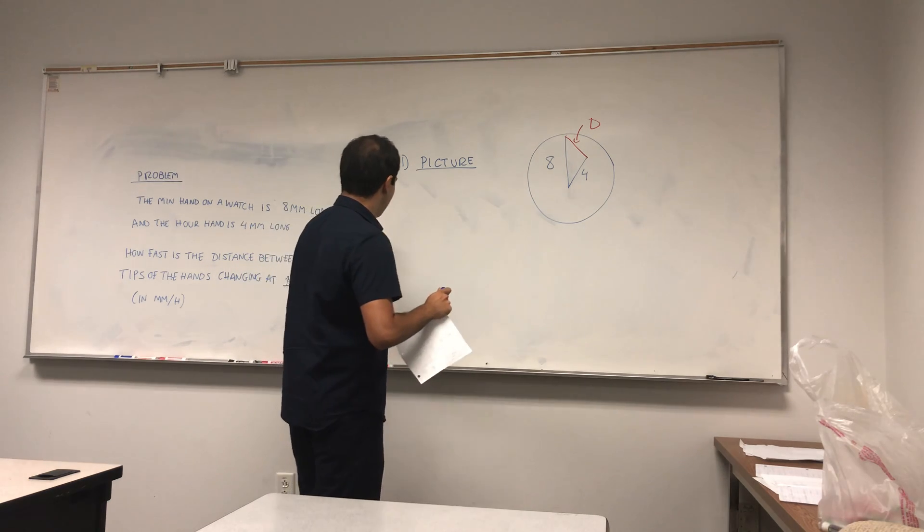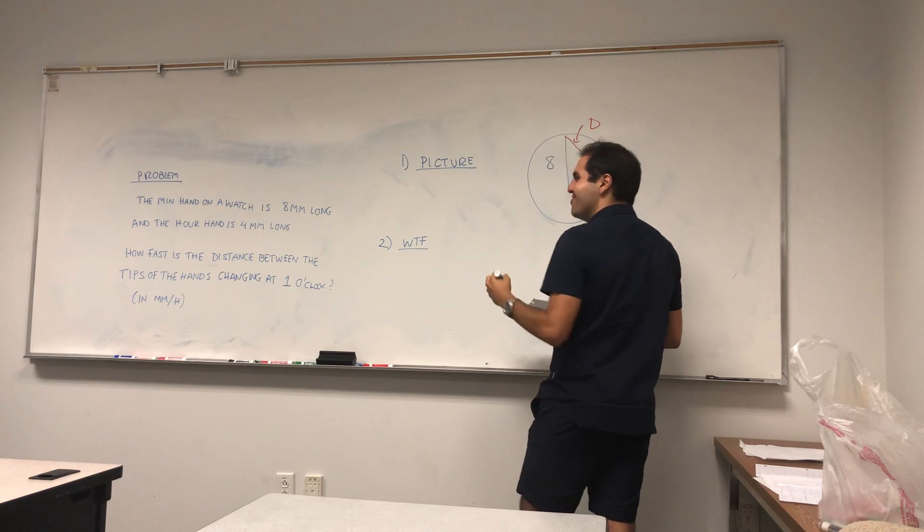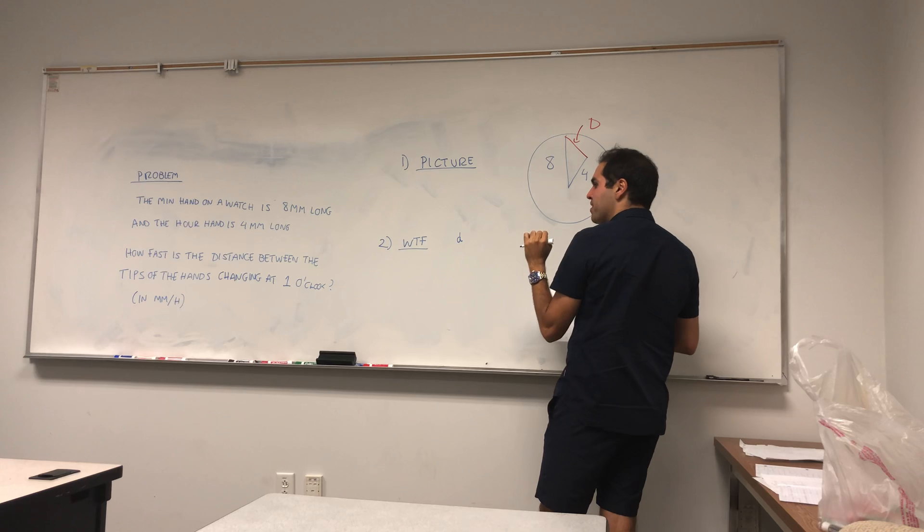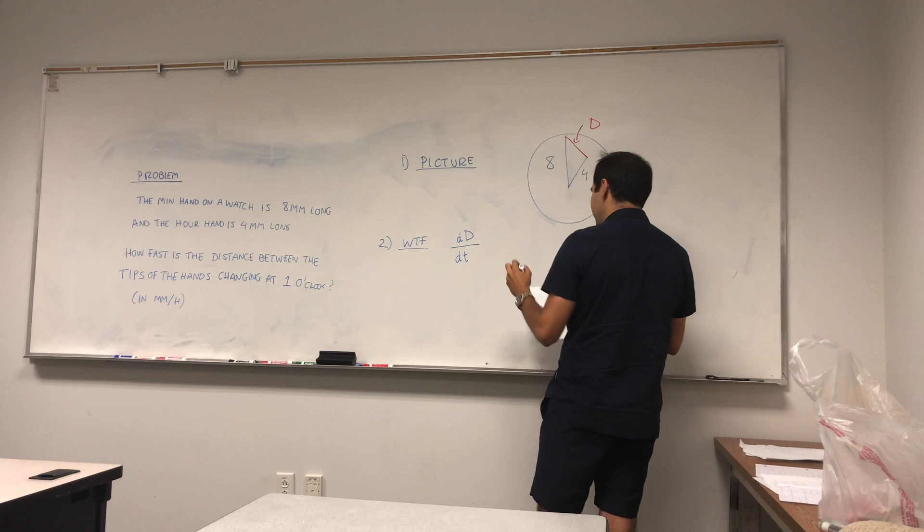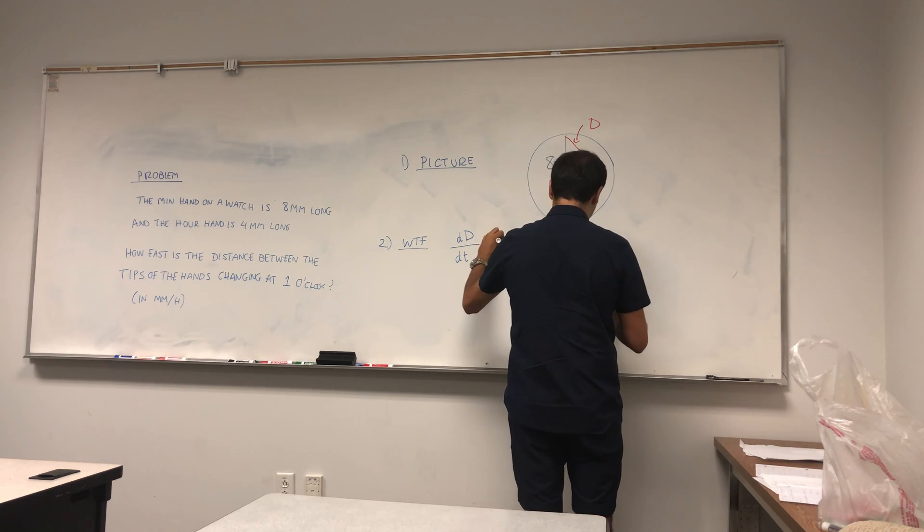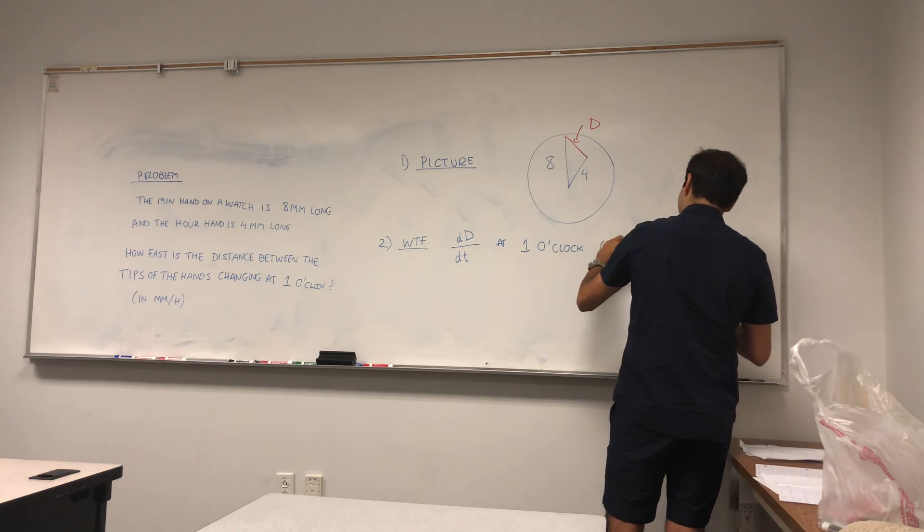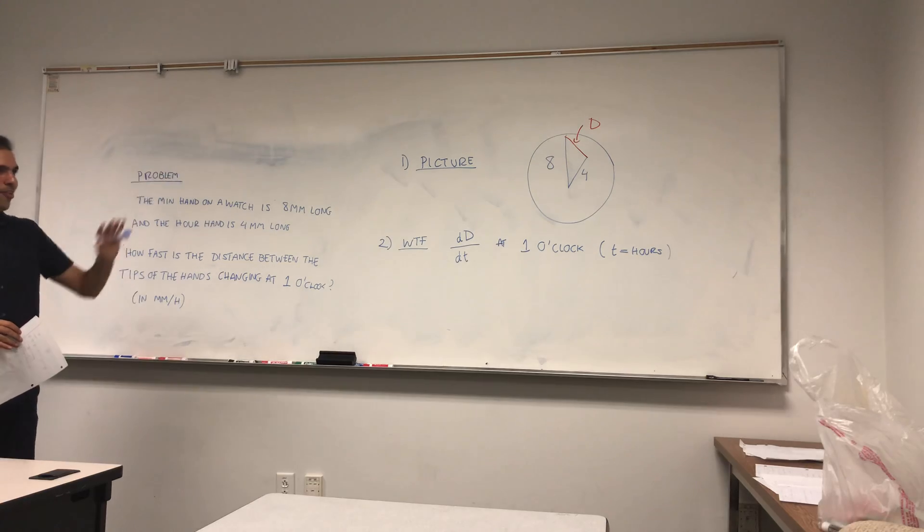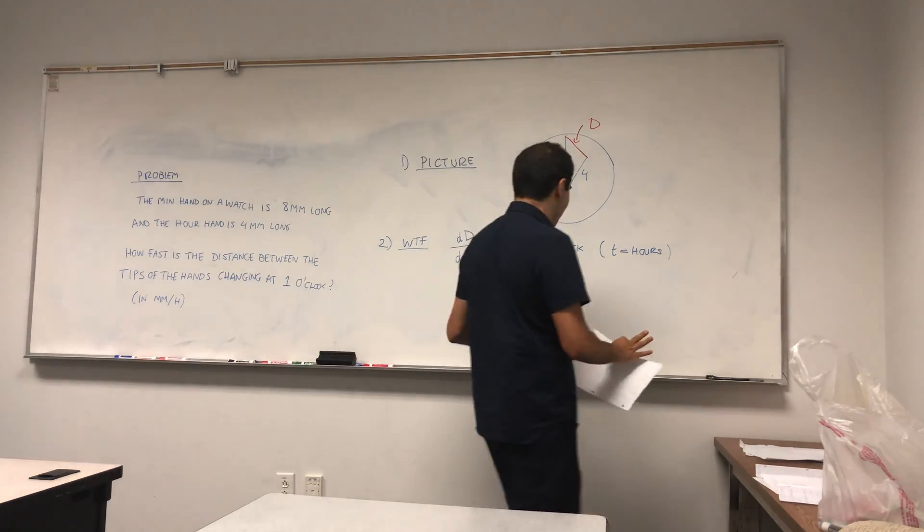In other words, we want to find dD/dt at 1 o'clock, where t in this case is in hours. We don't even need the problem anymore, we just wrote it in terms of math. And so the question is how do we figure that out?